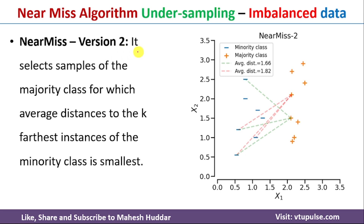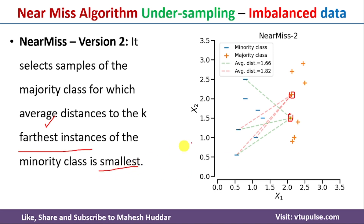The second variation of the NearMiss algorithm is similar, but instead of k nearest instances we identify k farthest instances from the minority class. Again, if k equals 3, from each majority class example we identify the three farthest minority class instances, calculate the average distance, and if the average distance is smallest we select those instances for deletion. This is the second version of the NearMiss algorithm.